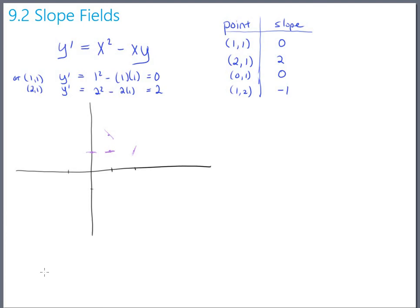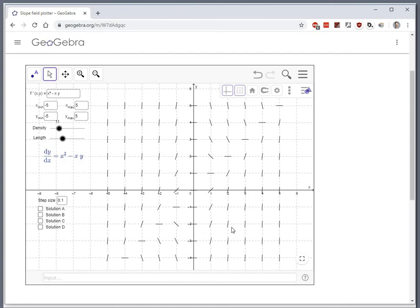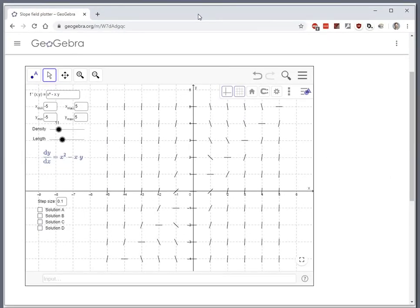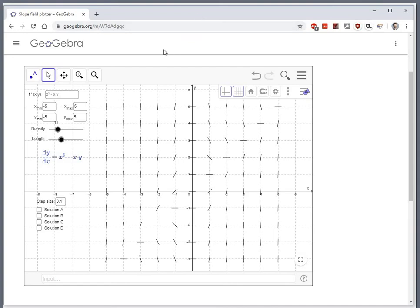So there are lots of websites and calculators and stuff out there that draw these things. These are called slope fields, by the way. It's a field full of the slopes. My favorite one is one that's on a website called GeoGebra. I'll put the link in the Canvas page. But let's take a look at what they've got. So this is the GeoGebra slope field plotter. And I went ahead and just typed x squared minus xy in here.